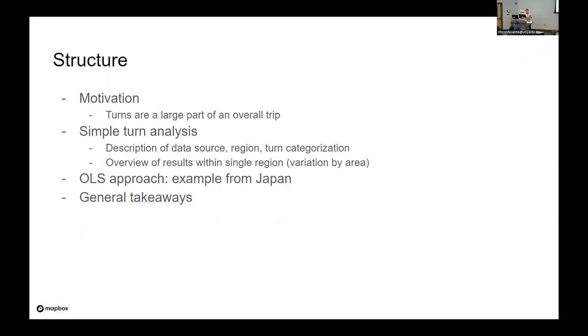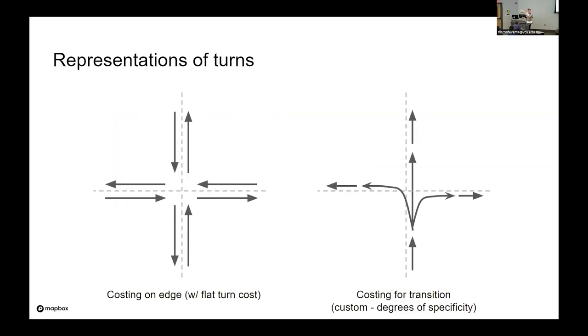The motivation for this is that, as you can imagine, when you're going along any sort of trip, turns are a large part of the overall trip time. So to demonstrate that, we'll do a simple turn analysis with descriptive statistics around the cost of a turn in an overall trip. And then we'll take a more robust approach to demonstrate the representativeness of not just turns, but the interaction of turns against certain types of road classifications. And then we'll make some general takeaways if you're ever considering applying this in your own use cases.